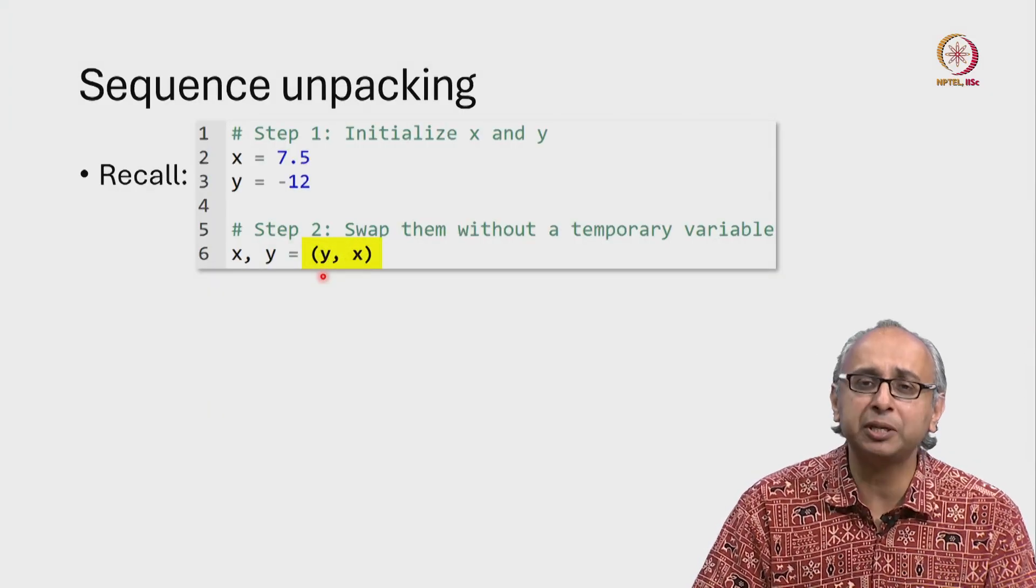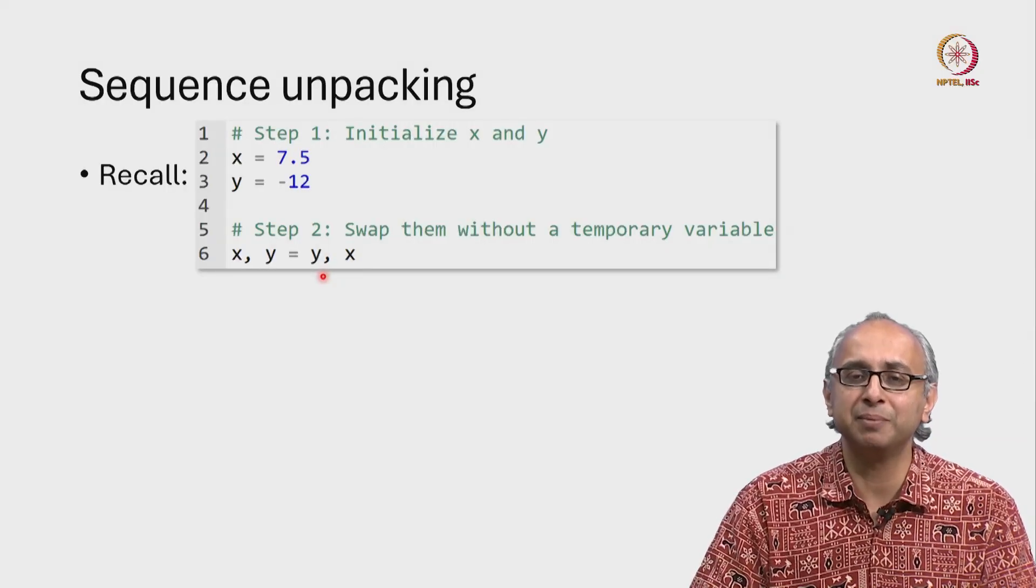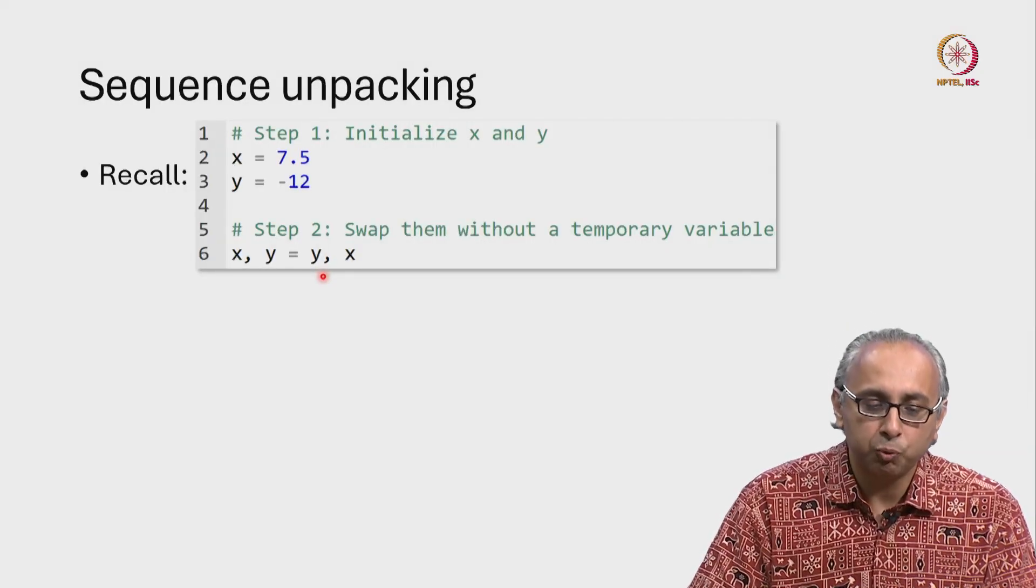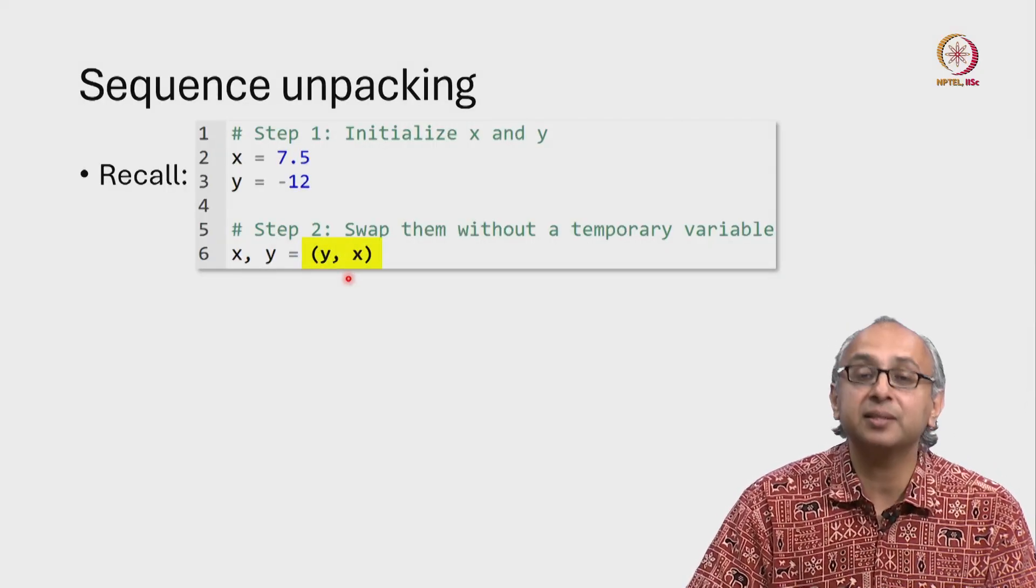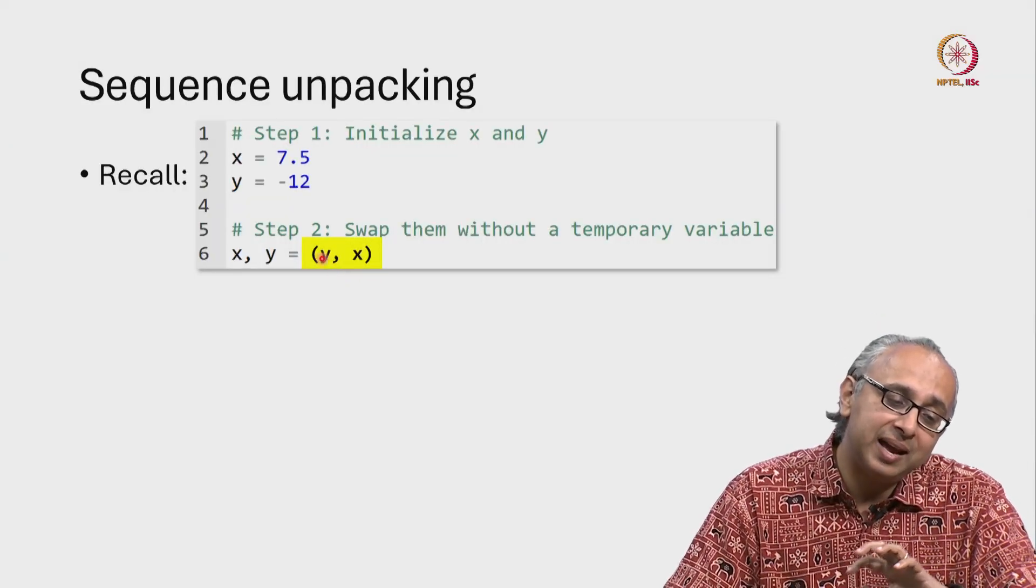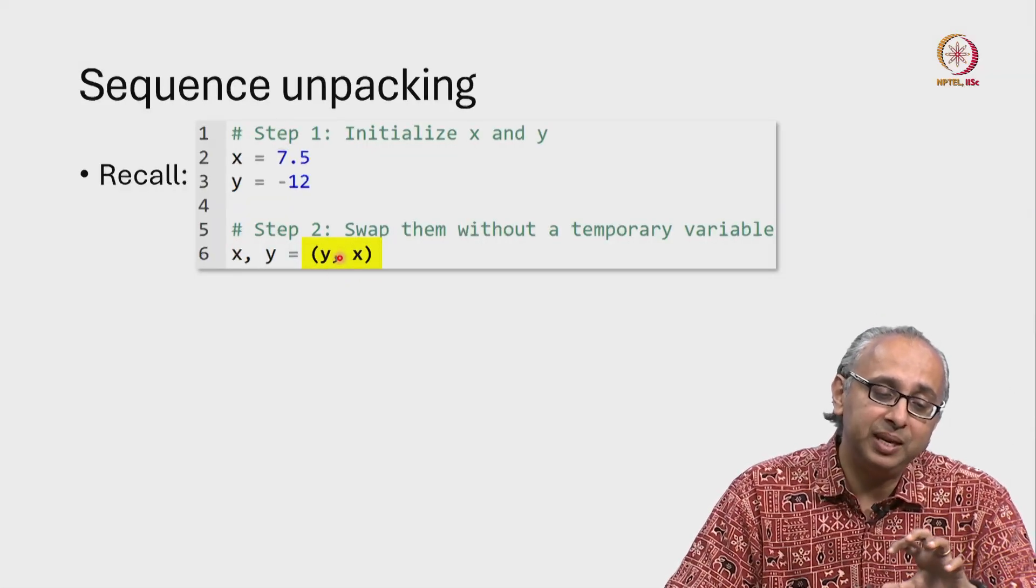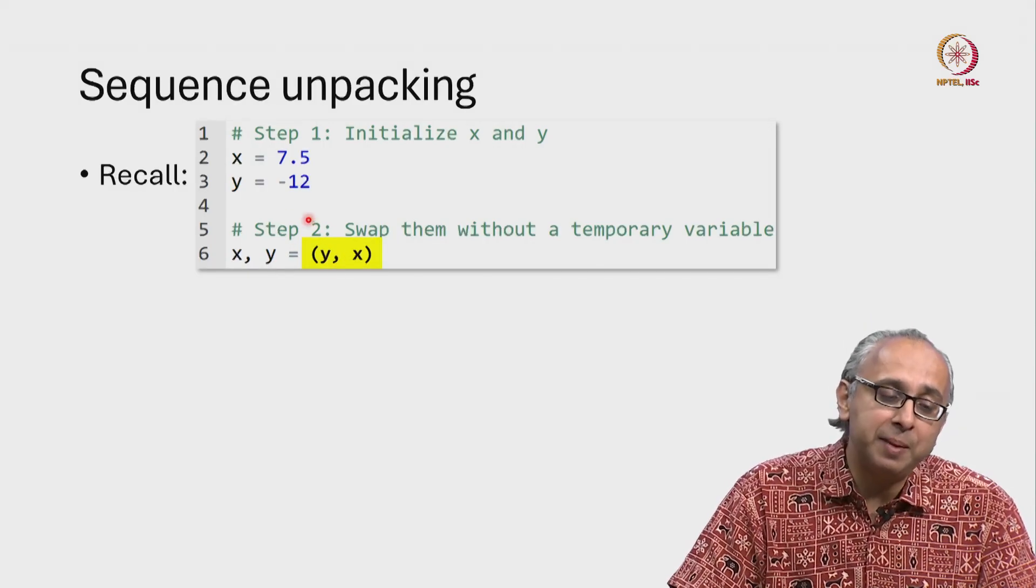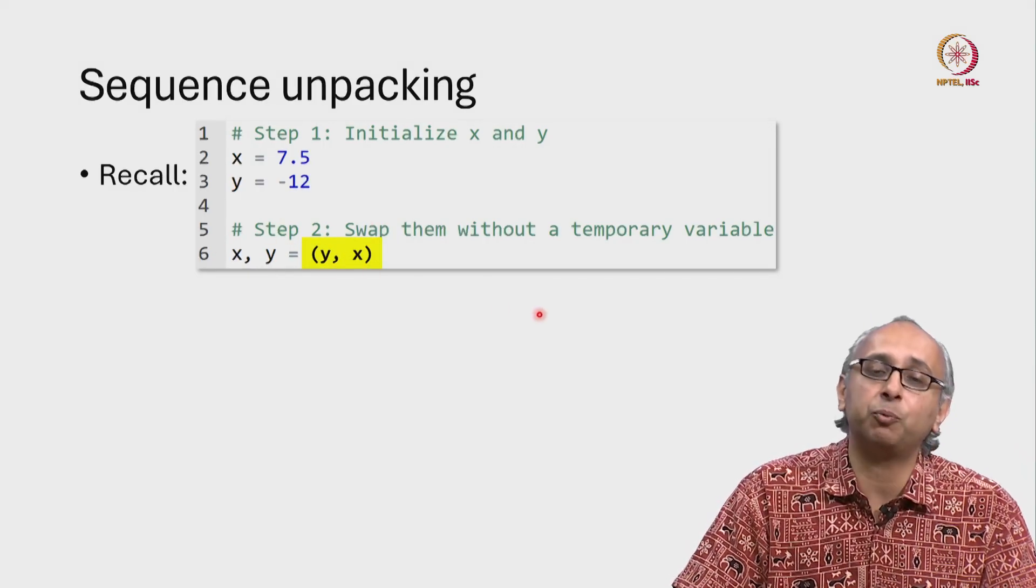It's more accurately written like this, although many people write this simpler syntax. So what we're saying is, take this tuple and then take its values and unpack them into these two variables. So this y becomes the x and the x becomes the y,